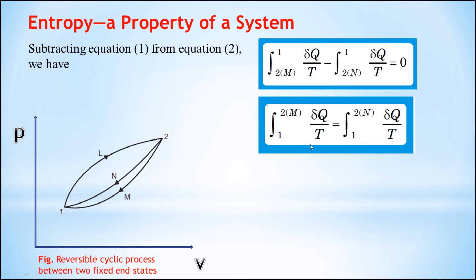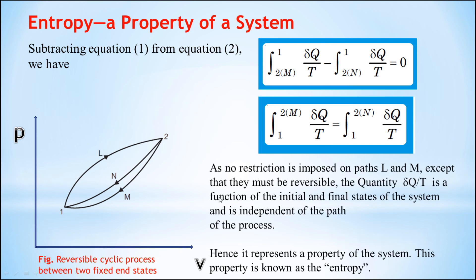So whenever the system follows path M or path N, the value of the integral is the same for both paths — it does not depend on the path. Since no restriction is imposed on paths L and M, the quantity δQ/T is a function of the initial and final state of the system and is independent of the path of the process. Hence it represents a property of the system, because properties only depend on state and not on path. So here we prove that entropy is independent of the path followed; it depends only on the initial and final state, so it is a property of the system. Thank you for watching this video.